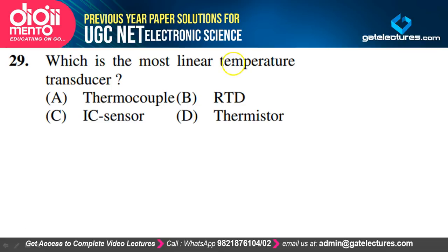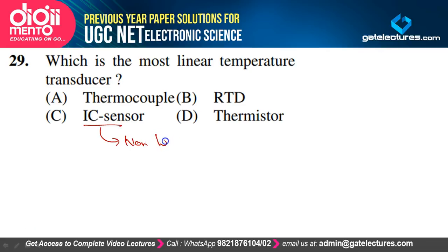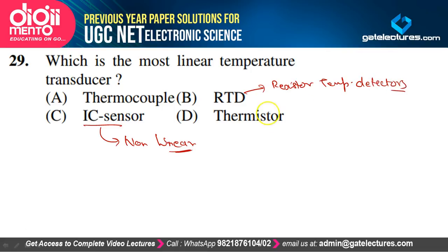The most linear temperature transducer: thermocouple, RTD (resistor temperature detector), and thermistor are linear, while the IC sensor is a non-linear device. So option C (IC sensor as non-linear) satisfies our explanation — IC sensor is the non-linear transducer.